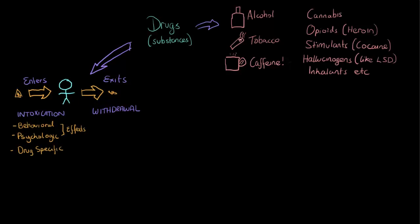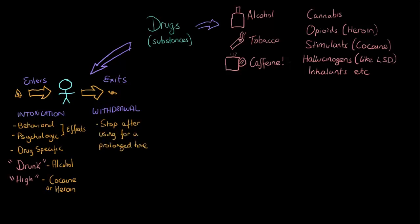What are we talking about when we mention intoxication? We're talking about both the behavioral and psychological effects of the drug on the person, and these can be very drug-specific. For example, when we're drunk, that's intoxication with alcohol. When we describe somebody as being high, that's a colloquial way of describing intoxication with another substance, such as cocaine or heroin. Withdrawal happens when we stop taking a substance after prolonged use. We get withdrawal symptoms — symptoms of stopping the drug — which can make us feel quite sick, and in some cases can be dangerous or potentially fatal, depending on the substance.